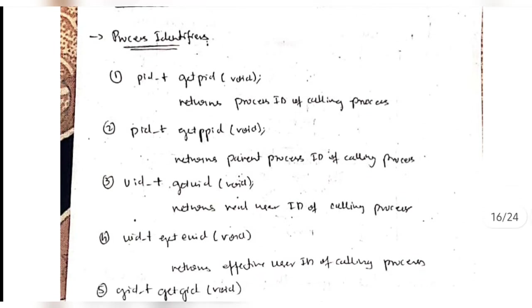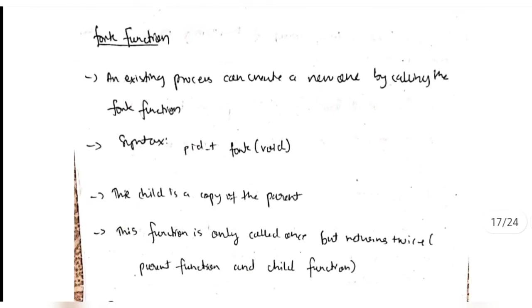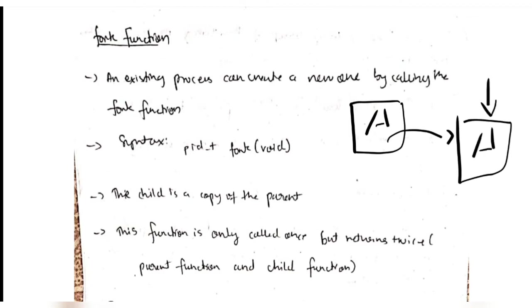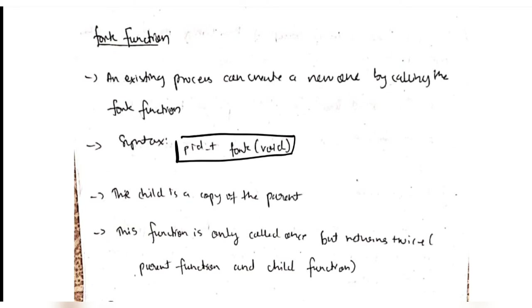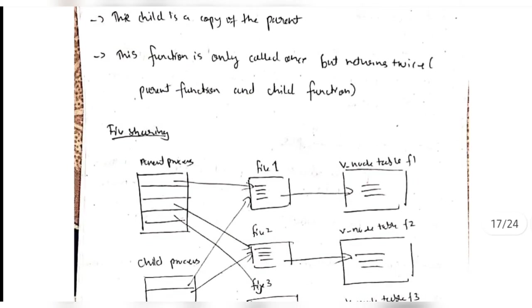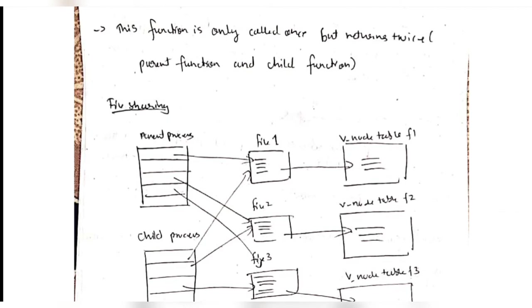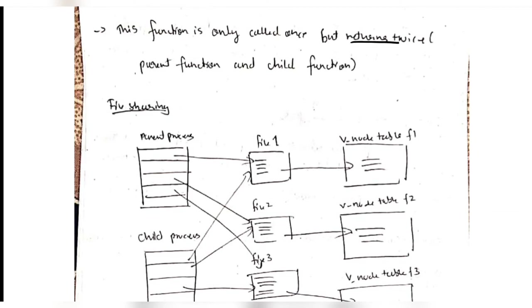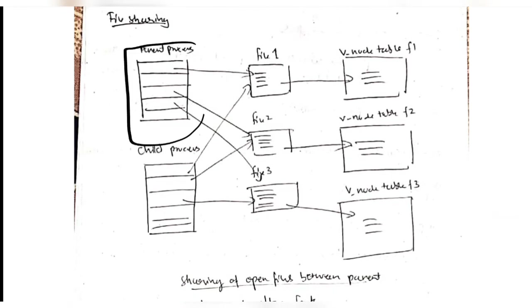Moving on to process control - we have some identifiers to get the process ID, parent process ID, user ID, and so on. We have the 'fork' function - suppose there is a function A, and if you fork it you get the same duplicate of A and can perform changes on it. When we fork, we get a child copy of the parent. When you call a function from the child copy it is called once, but it will return the value twice - it returns from the parent first, then from the child.